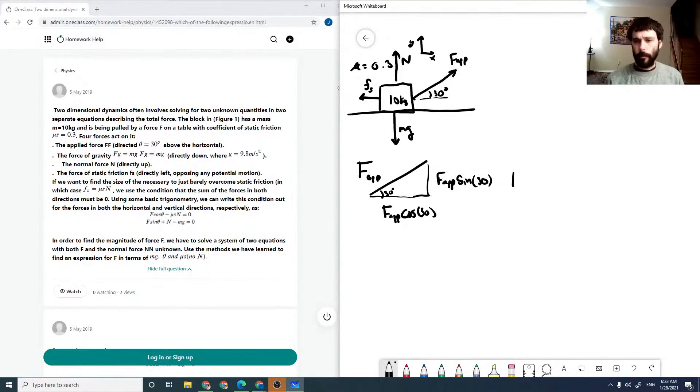And so we can write that our applied force in vector notation is the force applied times cosine of 30 in the x-hat, plus force applied sine of 30 in the y-hat.